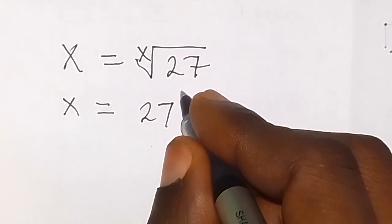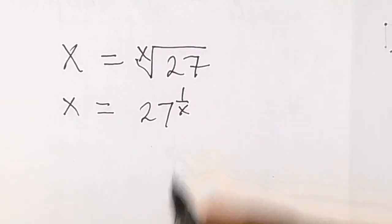So x root of 27 can be written as 27 raised to power 1 over x.